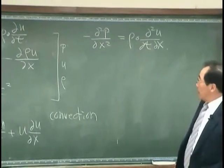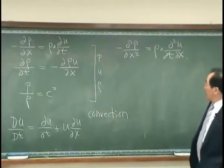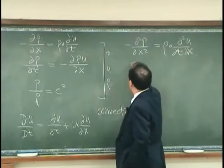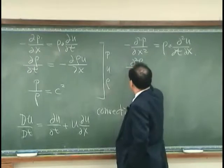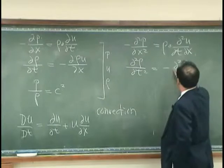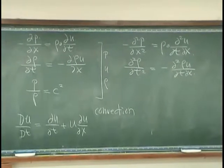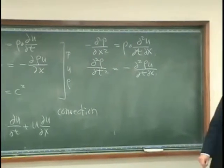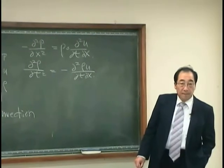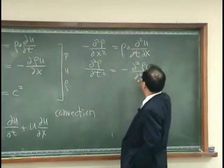And then I differentiate this with respect to time. Then I have d²ρ/dt² = -d²(ρu)/dt dx.